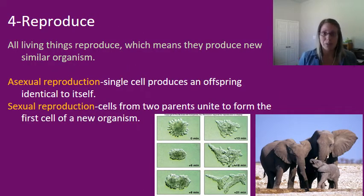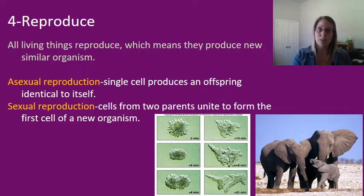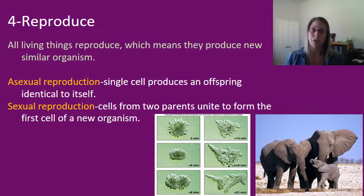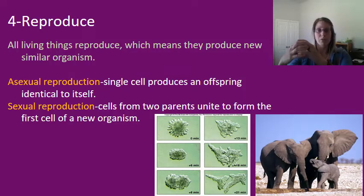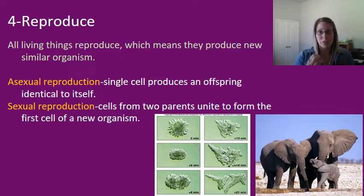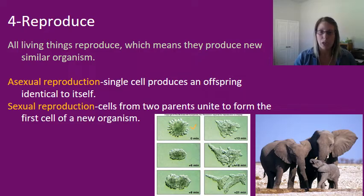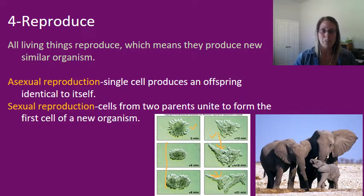The fourth characteristic is reproduce. All living organisms reproduce — they produce a new, similar organism. There are two types: asexual reproduction, where a single cell produces an identical copy of itself as its offspring, and sexual reproduction, where a cell from two different parents unites to form the first cell of the new organism. This picture shows an amoeba going through asexual reproduction — it starts as one cell, grows, and eventually splits into two cells.